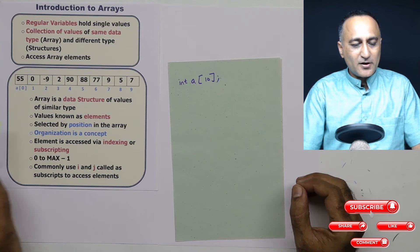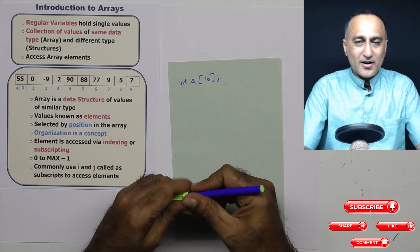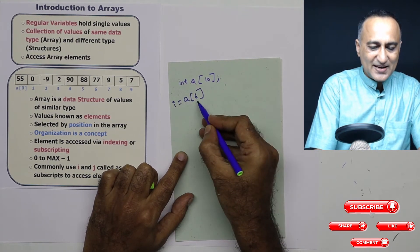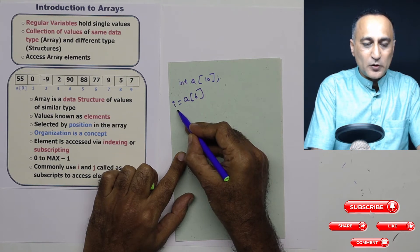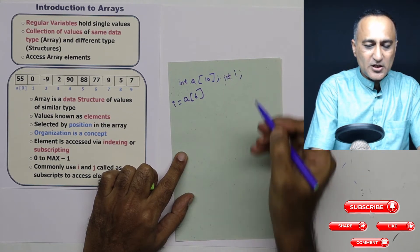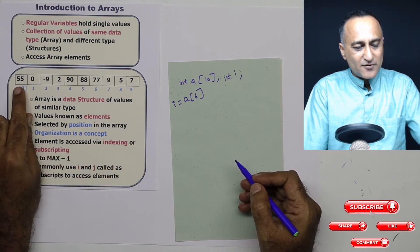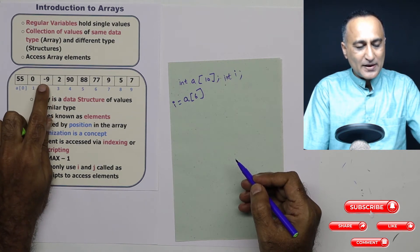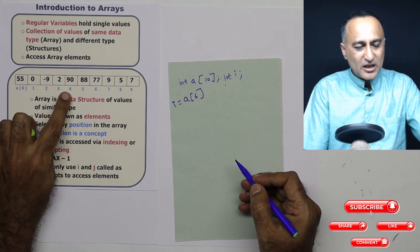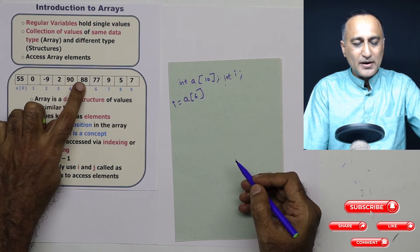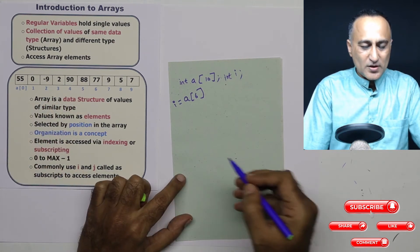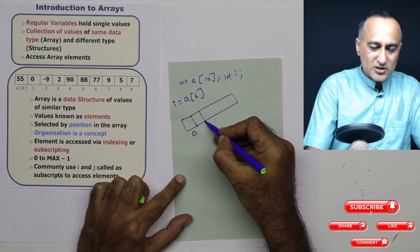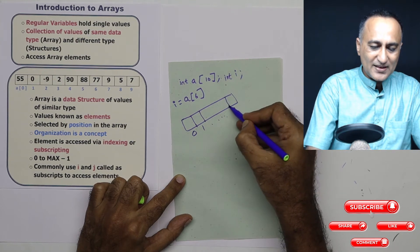Although I am declaring 10, since I am counting from 0, my maximum locations are going to be from 0 to 9. So suppose I had to refer to number 77, I would refer to number 77 as a of 6. Suppose I say i is assigned a of 6, 77 will get copied to i assuming i is also an integer variable. So a of 0 refers to 55, a of 1 will refer to 0, a of 2 will refer to minus 9, a of 3 will refer to 2, a of 4 will refer to 90, a of 5 will refer to 88. So the way these are stored is starting from the 0th index or the 0 subscript all the way till the 9 subscript.